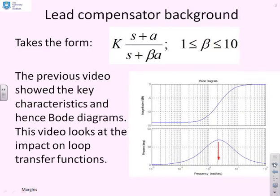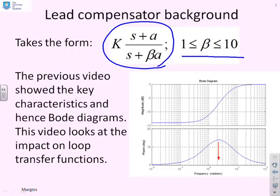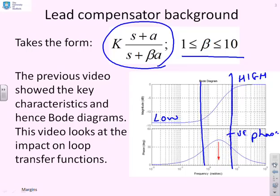A quick reminder of what we did in the previous video. We defined our lead compensator with the formula k(s + a)/(s + βa), with β positive and between 1 and 10. A typical lead compensator has low gain at low frequency and high gain at high frequency, and it also has positive phase. The corner frequencies mark the region where all the key action happens — you get maximum slope moving from low to high gain, and maximum phase.